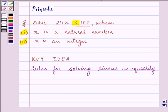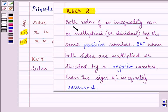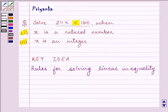Whereas, rule 2 says, both sides of an inequality can be multiplied or divided by the same positive number. But, when both sides are multiplied or divided by a negative number, then the sign of the inequality is reversed. These are the two rules that will be helping us in solving the inequality given to us.